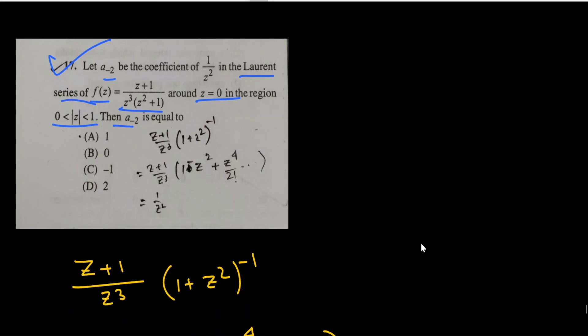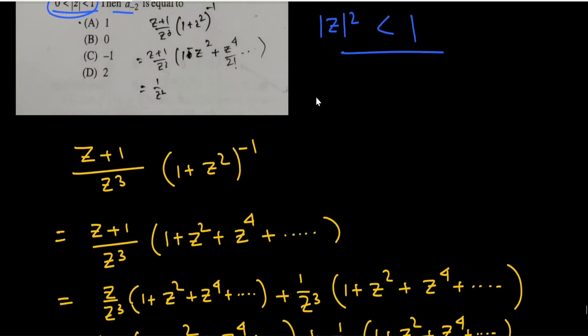Let's start the first question. It says: let a₋₂ be the coefficient of 1/z² in the Laurent series expansion of the function f(z) = (z+1) / (z³ · (z²+1)) around z = 0 in the region 0 < |z| < 1. Find a₋₂. Since |z| < 1, we also have |z²| < 1.